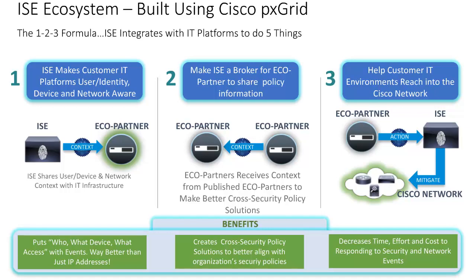For use case number three, adaptive network control mitigation actions. Security solutions or ecosystem partners can also take action based on violations of their security policy. The benefit of this allows organizations to take decisive actions according to its security policy.